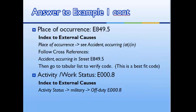Let's go to place of occurrence. You can find this by going to the index of external causes, looking under P for place of occurrence, and you will get a cross reference to accident occurring. We have a code of Street, E849.5. Go to the tabular list to verify this code. You will see that this is more of a best fit code because we don't have the specific word expressway. So sometimes you won't always find what you're looking for — think of best fit.